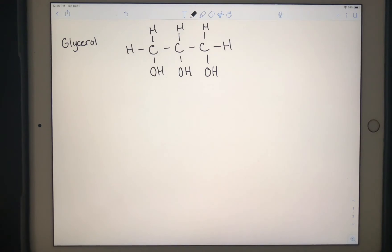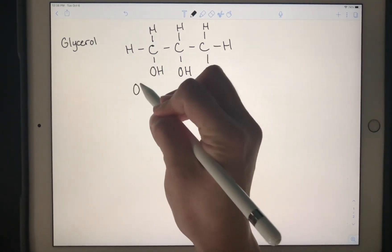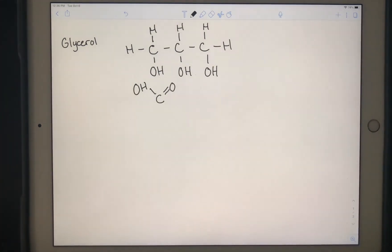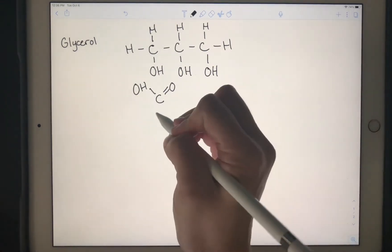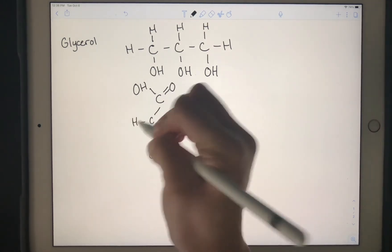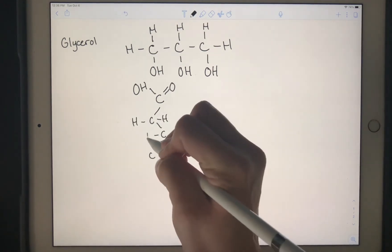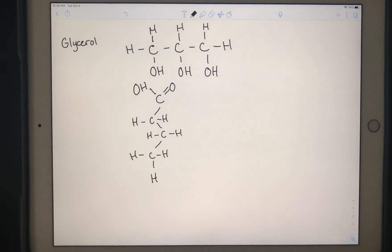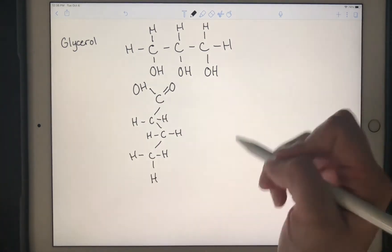So we have our molecule of glycerol, and below that I want us to write out three fatty acid chains. We're pretty used to doing this by now. There's that OH group connected to a carbon which also is connected double bond to an oxygen, and there's that chain of carbons. And because I'm going to make this a saturated fatty acid, I'm going to fill up each carbon's bonds with hydrogen.